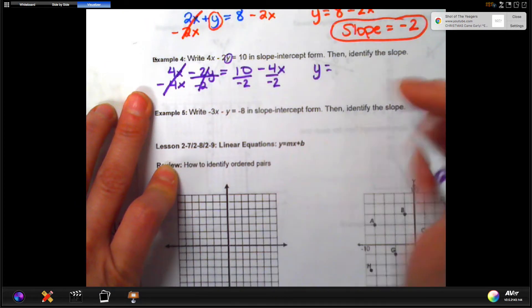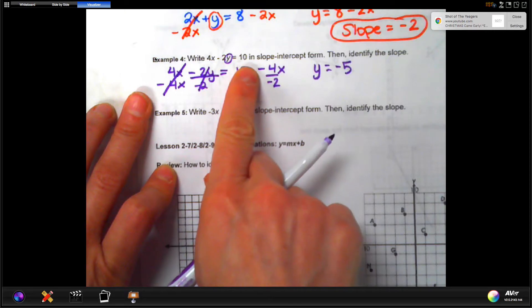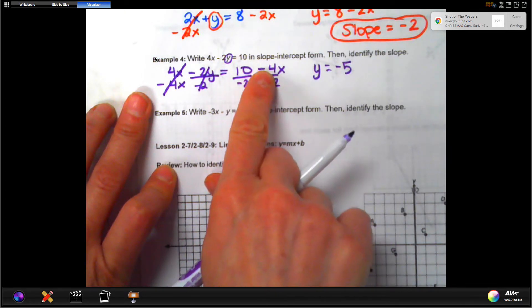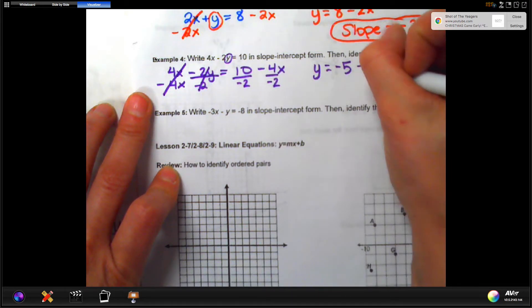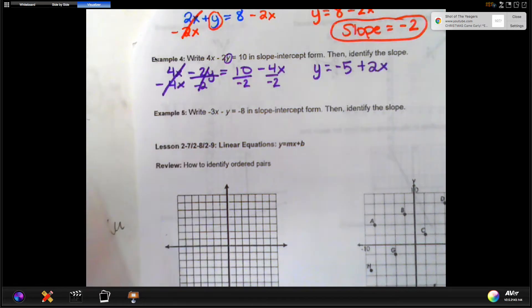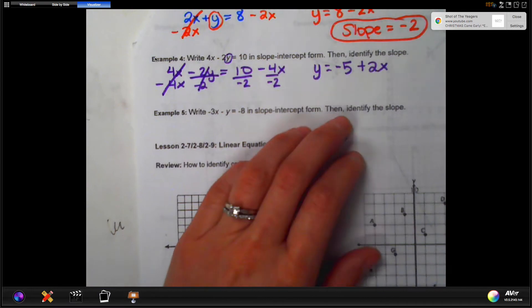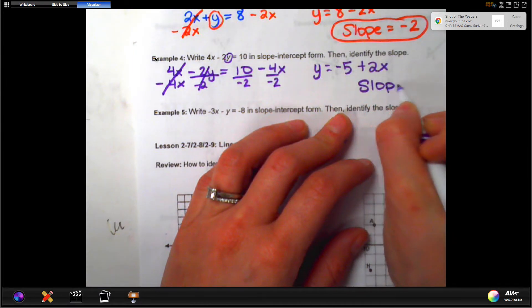10 divided by negative 2 is negative 5. Now, this is a negative 4 because the minus sign goes with the 4. Divided by negative 2 is going to give us positive 2, and there's our x. So, now the y is alone, which is what we wanted. It's in slope-intercept form. So, we look for the number next to x, and our slope is positive 2.